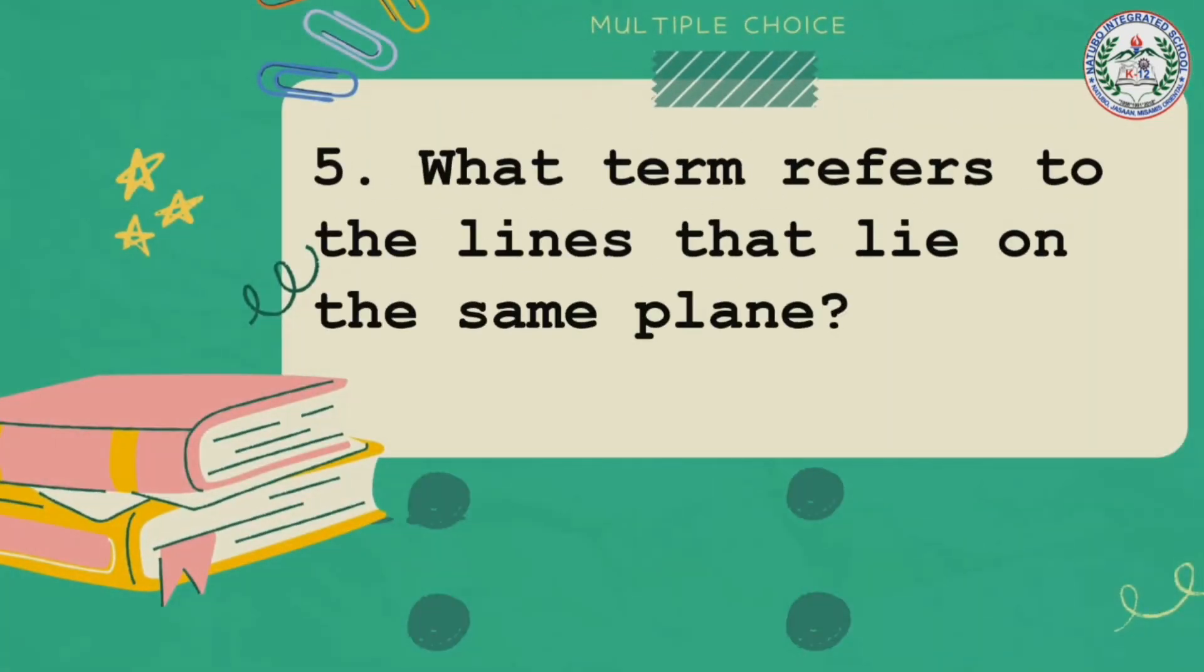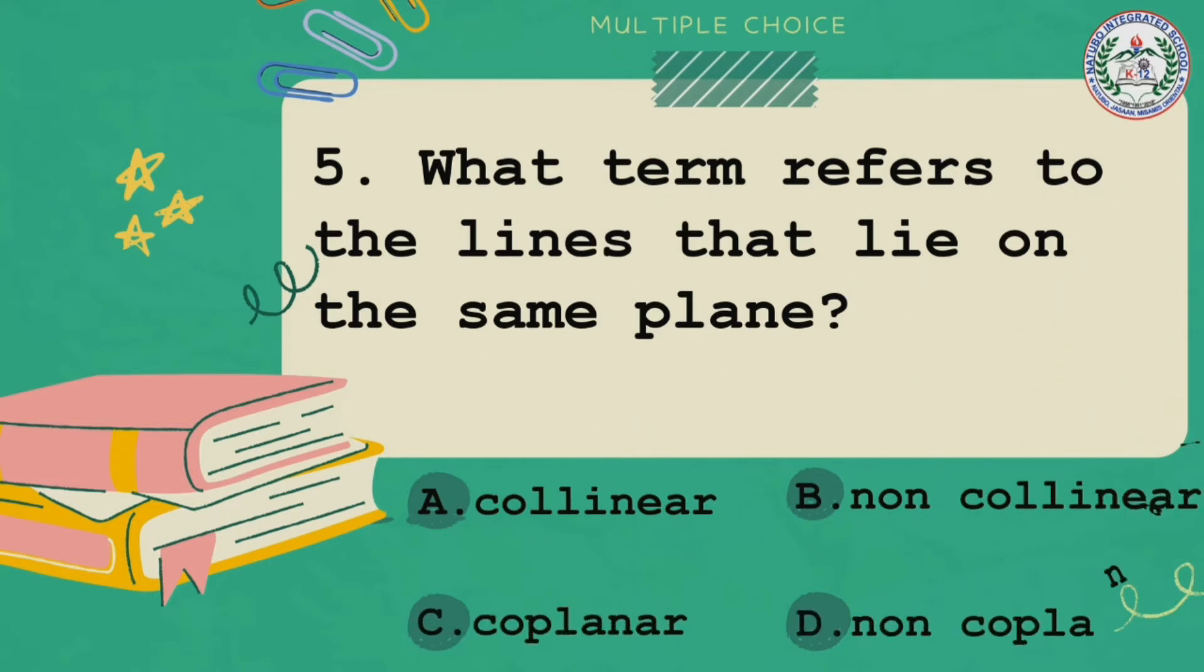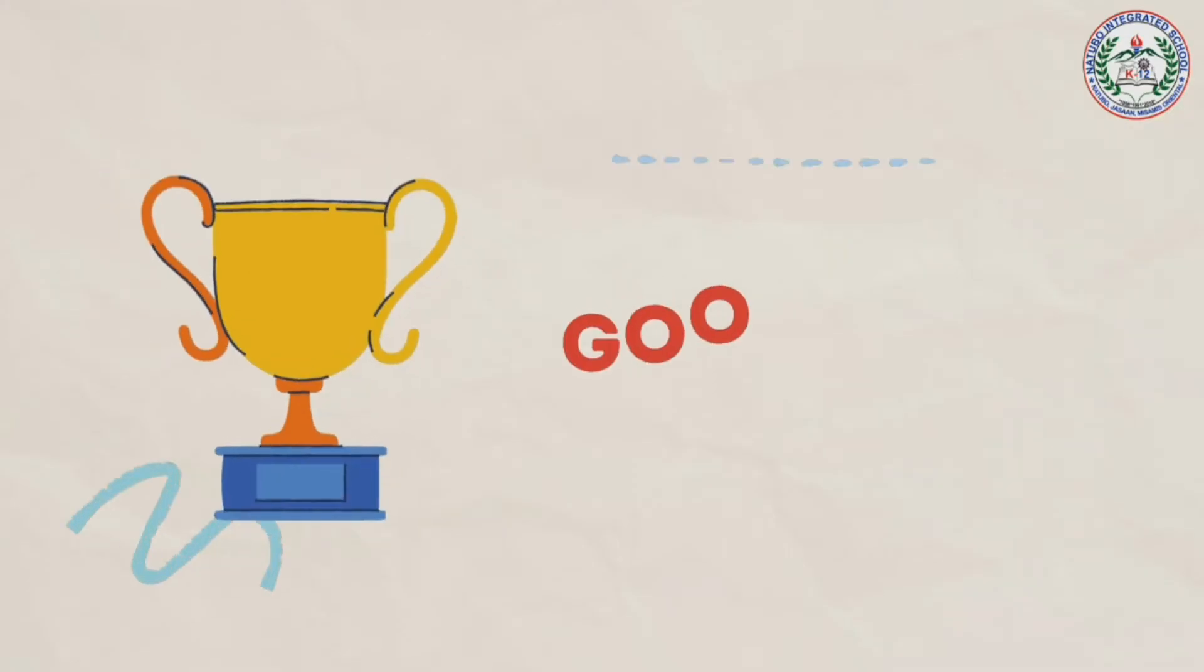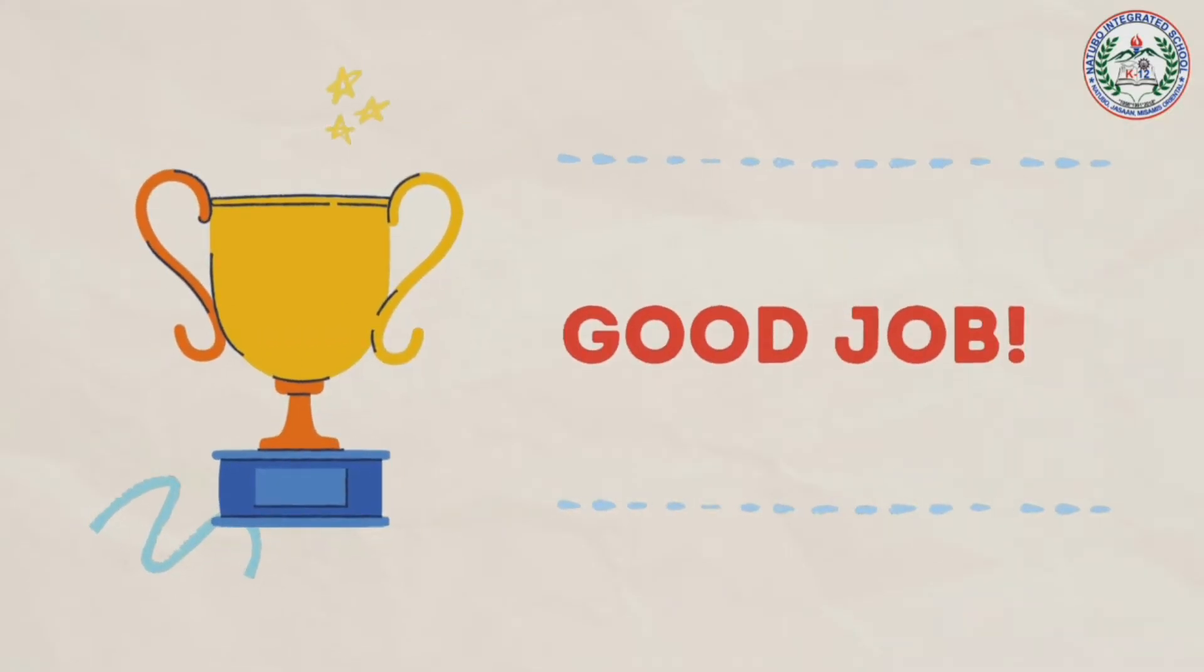Number five, what term refers to the lines that lie on the same plane? Is it A collinear, B non-collinear, C coplanar, D non-coplanar? And the answer is coplanar. So who among you got a perfect score? If that's so, good job!